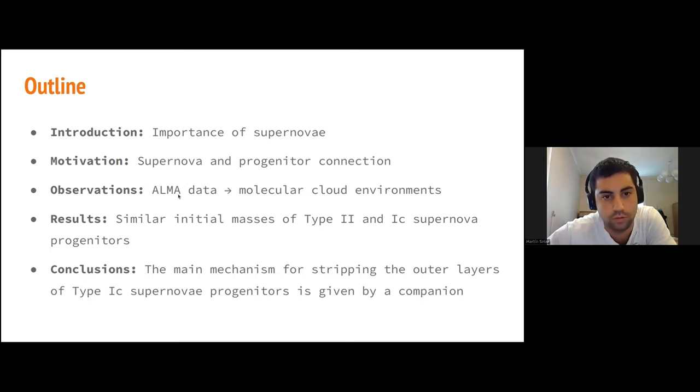Skipping the methodology and computations, the result is that the progenitor initial masses of stars from Type II and Type Ic supernovae are similar. The main mechanism for stripping the outer layer of Type Ic supernovae is given by a companion. I'm not saying that Type Ic progenitors can't be high mass stars, because strong stellar winds can blow off the outer layer. But given my results, both mechanisms are possible.